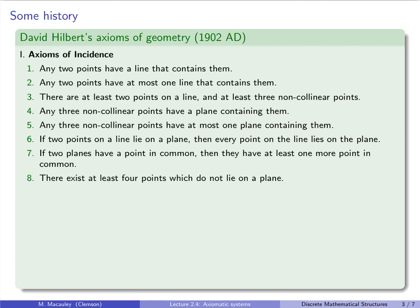The first ones are called the axioms of incidence. The first one of those says that any two points have a line that contains them. So if you have any two points, then there is some line between them.